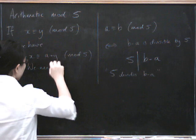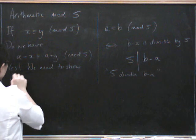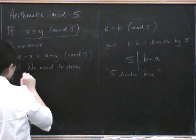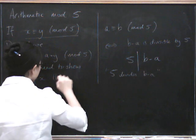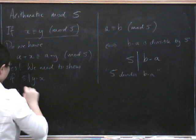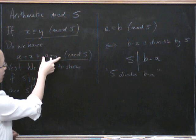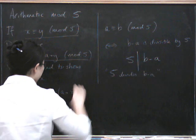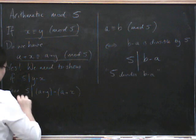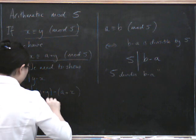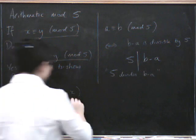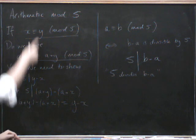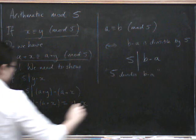We need to show that if, so what does this mean? This means that 5 divides y minus x. If 5 divides y minus x, then 5 divides, well what does that mean? We have to do this side minus that side. So that's a plus y minus a plus x. But a plus y minus a plus x simply equals y minus x. So this condition is exactly the same as this condition. So this is definitely true. If this is true, then this is definitely true. So we're done.